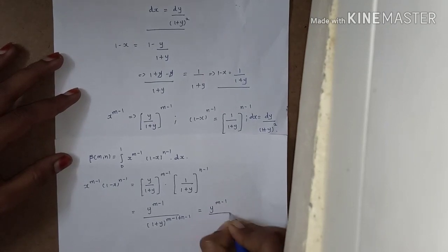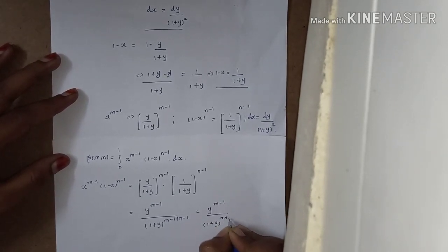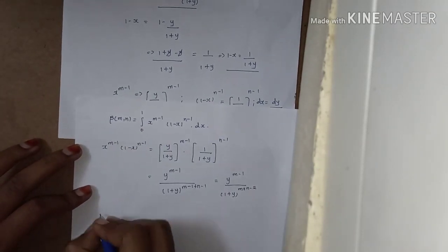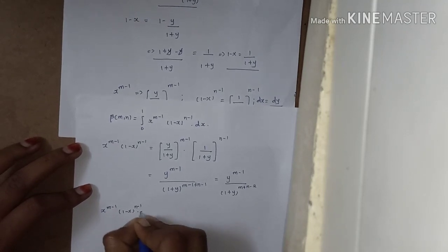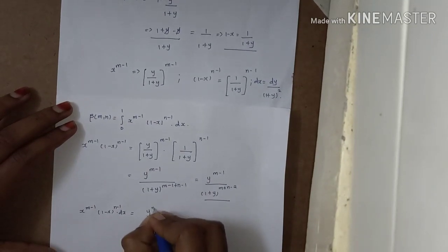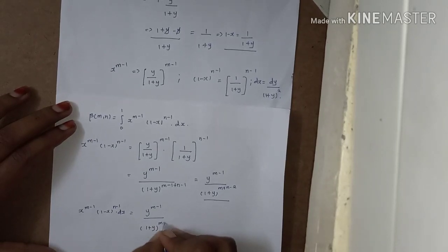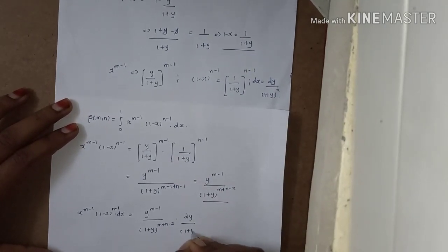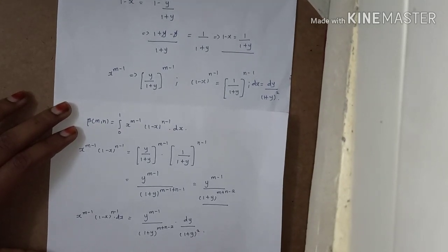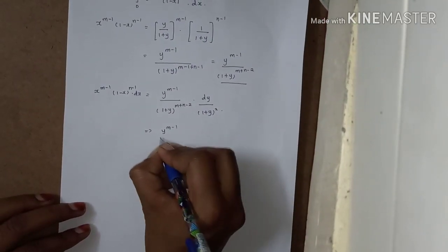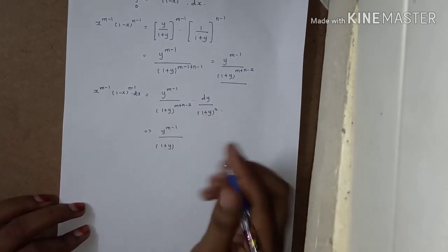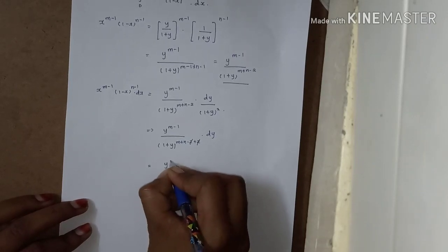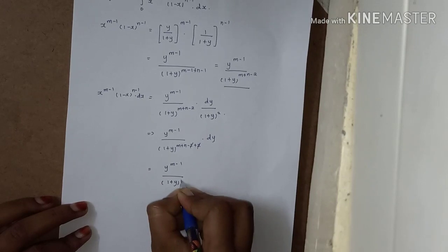This simplifies to y power m minus 1 divided by 1 plus y to the power m plus n minus 2. Multiplying by dx equal to dy divided by 1 plus y whole square, the full expression becomes y power m minus 1 divided by 1 plus y to the power m plus n, times dy.